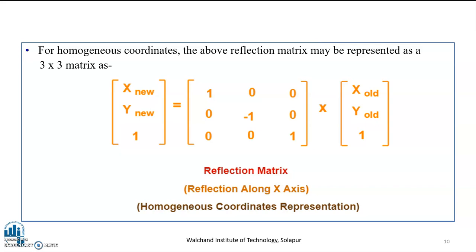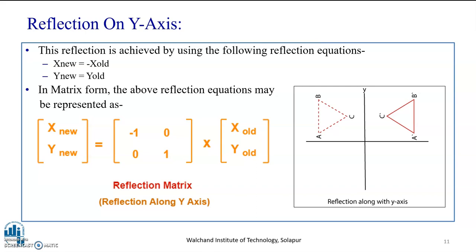Now we understand reflection on the y-axis. As seen in the diagram, the original object is triangle ABC and the reflected object is triangle A-dash, B-dash, C-dash. This reflection is achieved using the equation: x-new equals minus x-old, and y-new equals y-old. As the reflection is along the y-axis, the y-coordinates remain the same whereas the x-coordinates move to the negative side. In matrix form: [x-new, y-new] = [-1, 0; 0, 1] × [x-old, y-old].